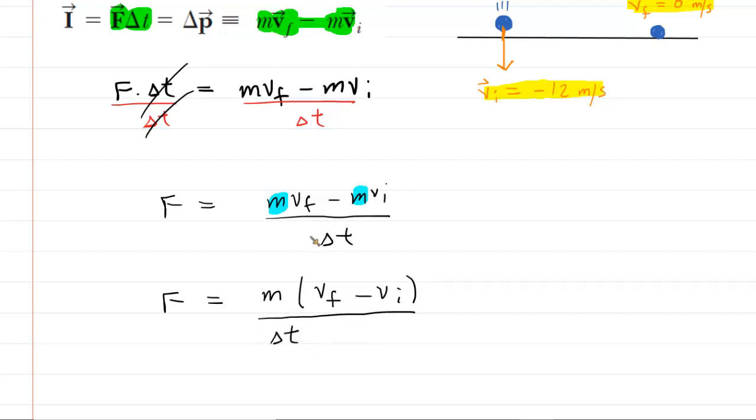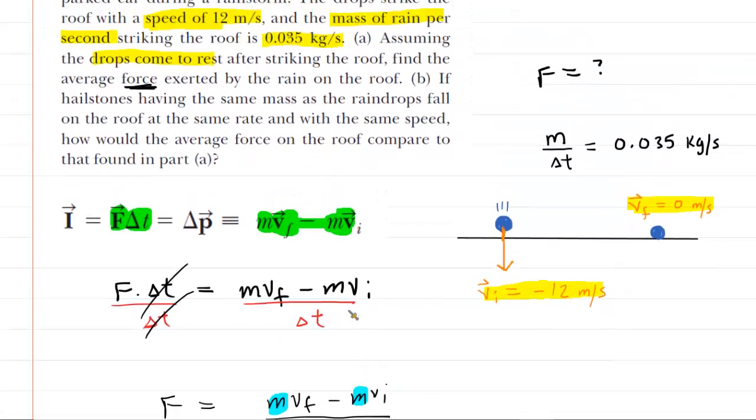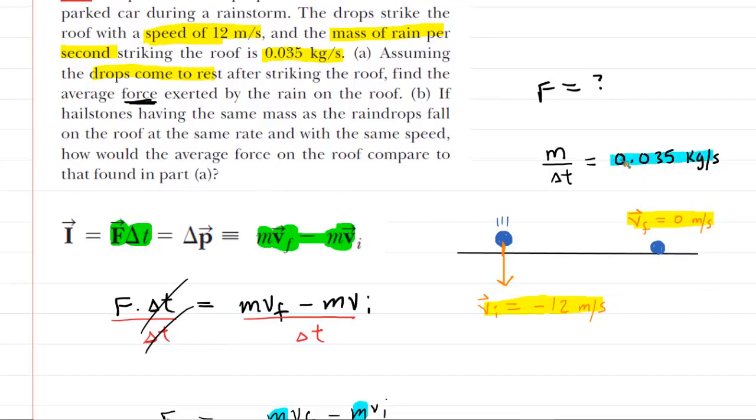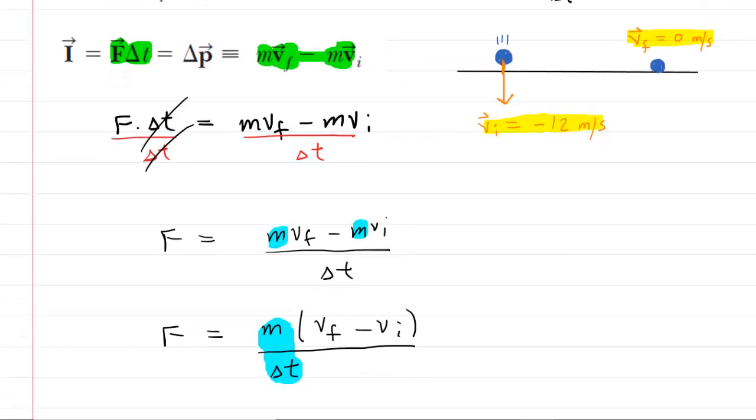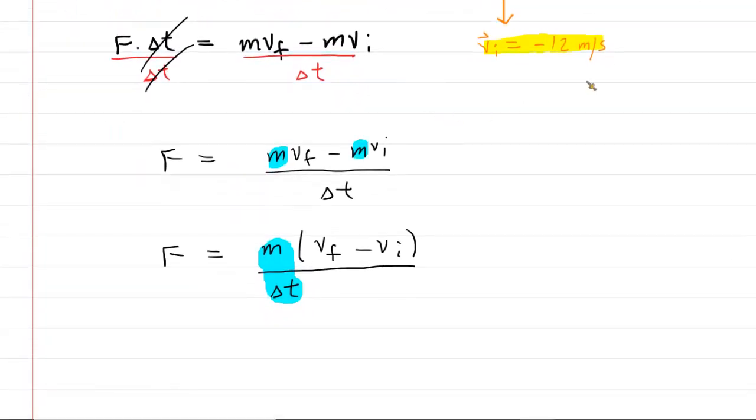Now, if you look carefully, you will see this special quantity of mass divided by delta t. That was that quantity given to us earlier. It was the 0.035 kilograms per second. So we're going to be able to now simply plug in the known values. Let's go ahead and do that.